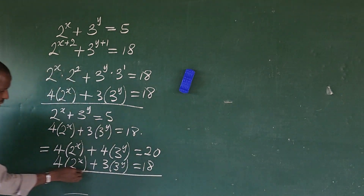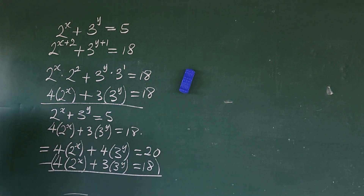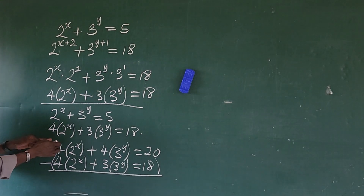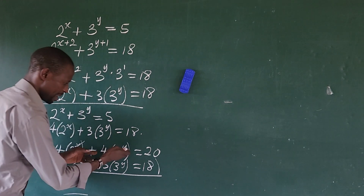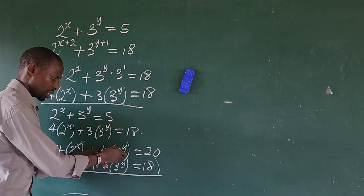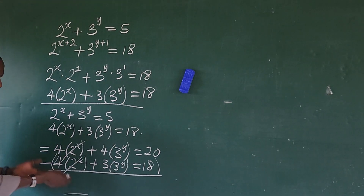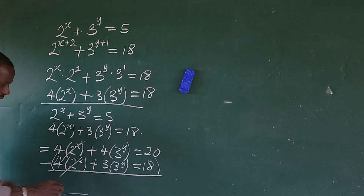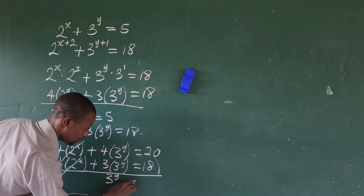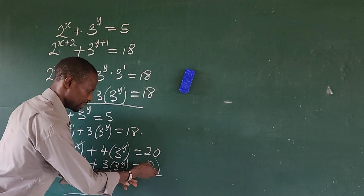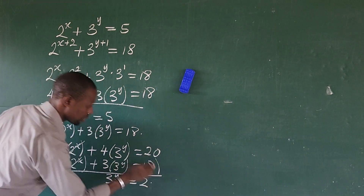At this point we subtract. The first terms cancel. We are left with 4 times 3 to the power of y minus 3 times 3 to the power of y, which gives us 3 to the power of y. So we now have 3 to the power of y equals 20 minus 18, which is 2.